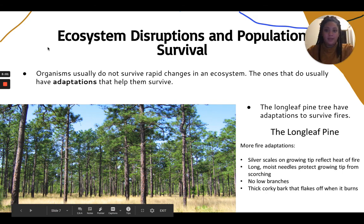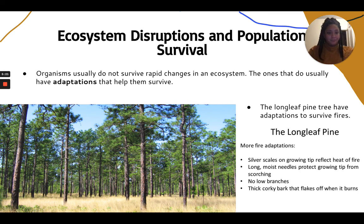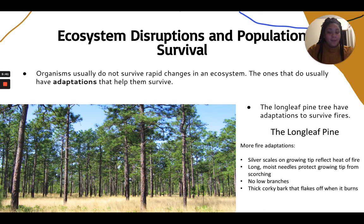Let's talk about ecosystem disruptions and population survival. Organisms usually don't survive rapid changes in their ecosystems, and the ones that do have adaptations that help them survive. An example is the longleaf pine, which has a great number of fire adaptations: silver scales that reflect heat, long moist needles that protect the growing tip from scorching, no low branches, and a corky bark that flakes off when it burns. All these adaptations allow the longleaf pine to survive better in fires.